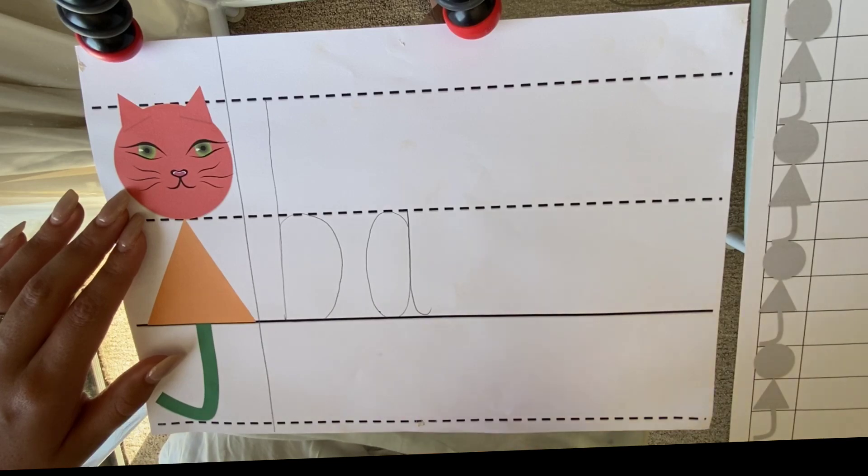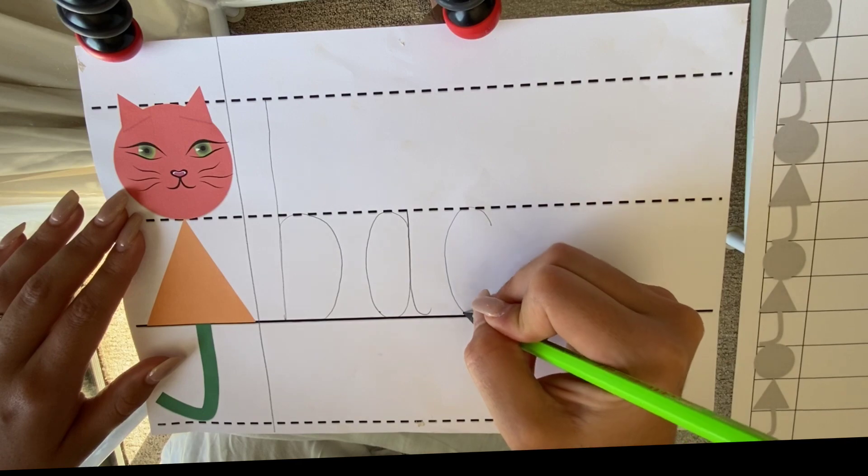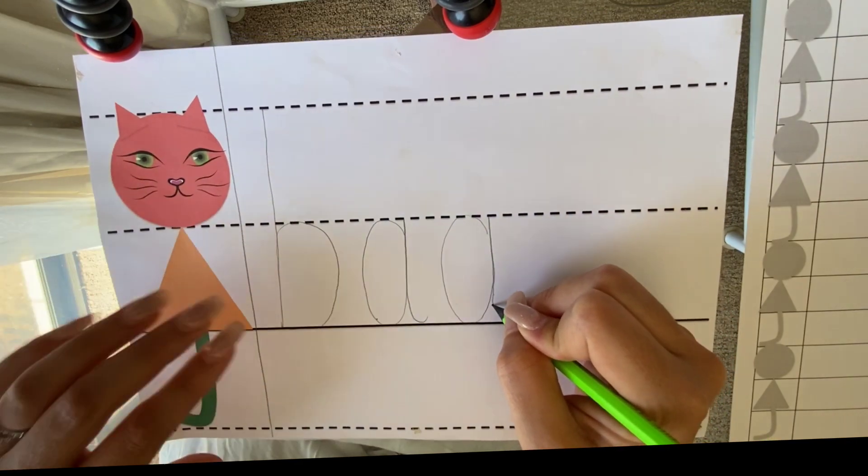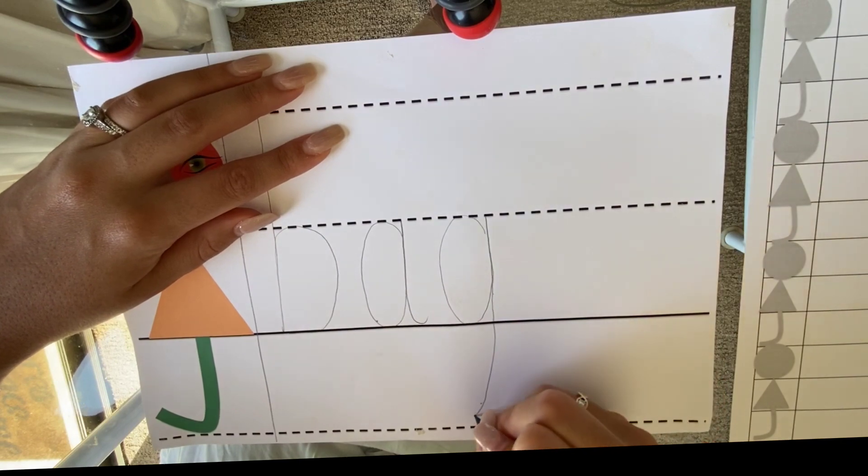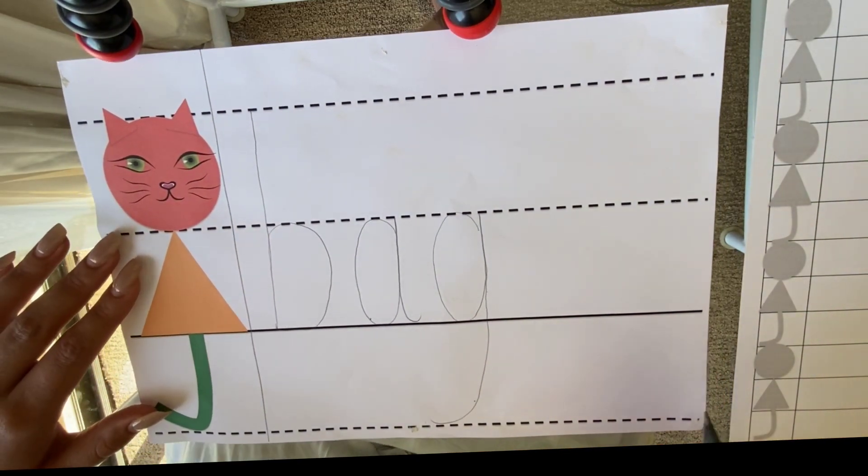Other letters, like the letter G, start in Oscar's tummy, go round up, down and their tail hangs neatly underneath, just like Oscar's.